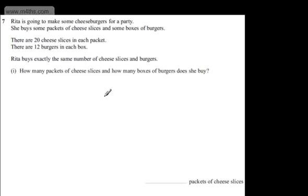This is question number 7. Rita is going to make some cheeseburgers for the party. She buys some packets of cheese slices and some boxes of burgers. There are 20 cheese slices in each packet and 12 burgers in each box. Rita buys exactly the same number of cheese slices and burgers.